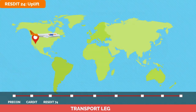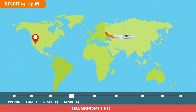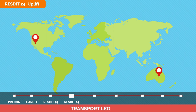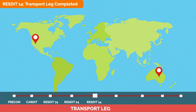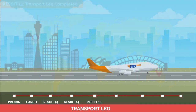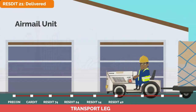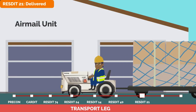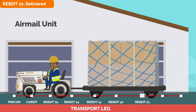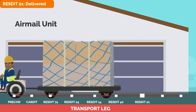The next scan is when the airline reports the uplift of the consignments — the RESDET 24 message — indicating that the consignment has been uplifted to the aeroplane for transport. The air transport is completed when the airline confirms the consignment has arrived at destination and scans a RESDET 14. The RESDET 40 message is scanned when the consignment has arrived at the carrier facility in a given airport. The airline informs the origin post that the receptacles are ready for delivery to the destination post with the event RESDET 21.